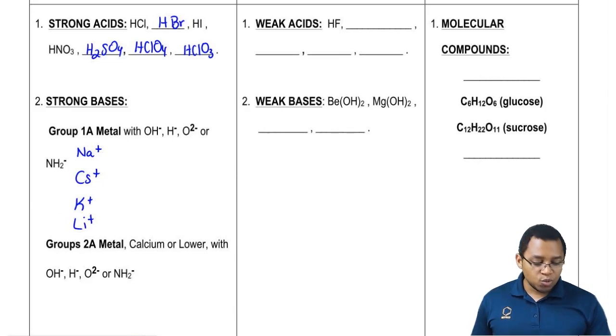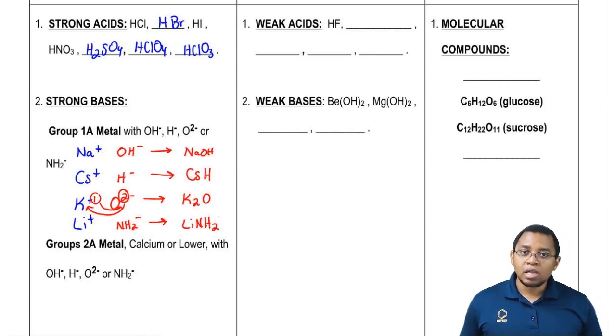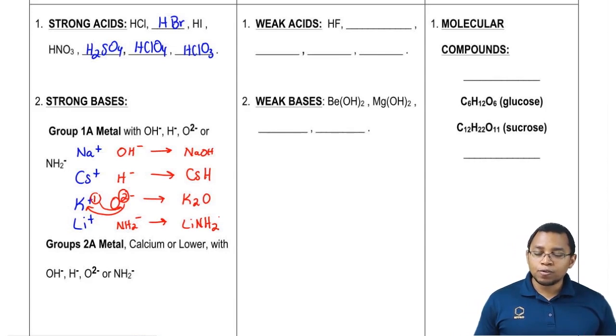We combine each of these with one of these ions. Na+, OH-, their charges just cancel out and you get NaOH. Here the charges just cancel out and you get CsH. The two from here is going to move down here. The one from here is going to move over here. This would be K2O and then finally you'd have LiNH2. All of these are good examples of strong bases. Any one of these four ions could combine with any one of the group 1A metals to create a strong base.